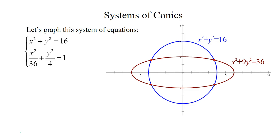And then we have a vertical minor axis of 4. So we're going up 2 and down 2. So we have points at (0, 2) and (0, -2).